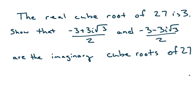Okay, so let's look at this question. The real cube root of 27 is 3. Show that $\frac{-3+3i\sqrt{3}}{2}$ and $\frac{-3-3i\sqrt{3}}{2}$ are the imaginary cube roots of 27.